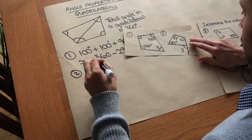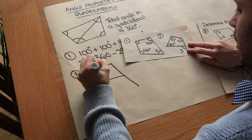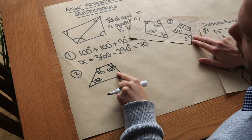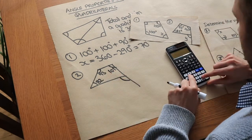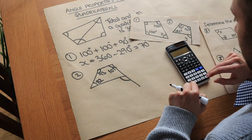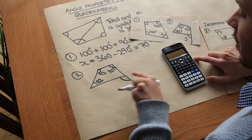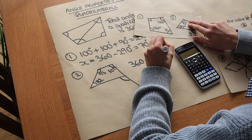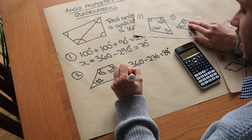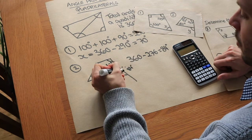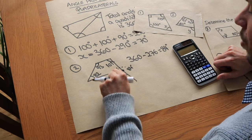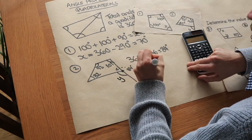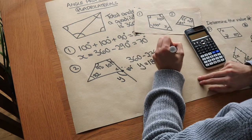For question 2, we have angles of 93, 101, and 82 degrees and we want to find the missing angle. Adding those three: 82 plus 93 plus 101 equals 276. So we do 360 minus 276, which equals 84 degrees — that interior angle is 84. Then, because these two angles are on a straight line and add up to 180, we do 180 minus 84, giving us 96 degrees.